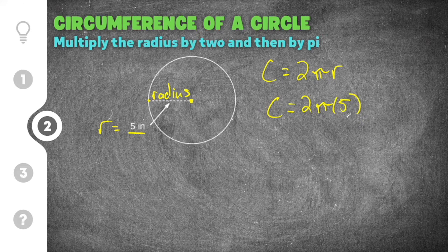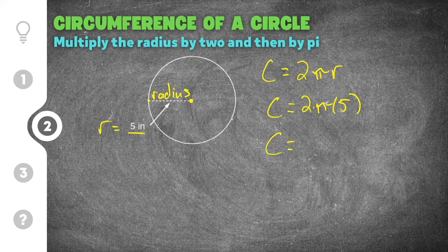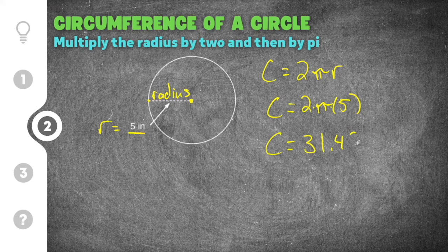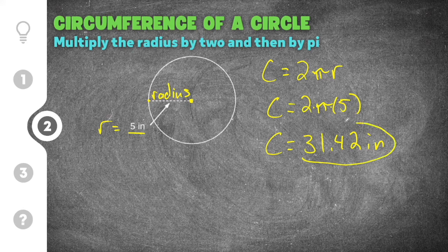I substitute five in for r, then go to my calculator and punch in two times pi times five. When I do that I get 31.42, and the units are inches, so the circumference of this circle is 31.42 inches.